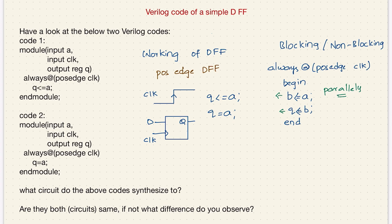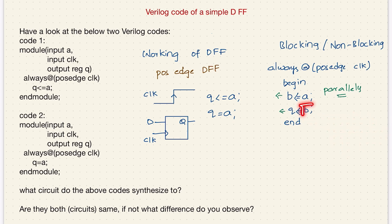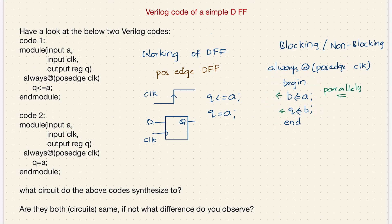You may ask: here you are using a value b — if the first statement is not executed, how are you getting this value? Well, you will get this value from the previous assignment. So the previous value of b needs to be stored — that's why we will be getting two flip-flops here, for b and q. The previous value of b is stored, and the next time whenever there is a positive edge of the clock, that previous value is used.